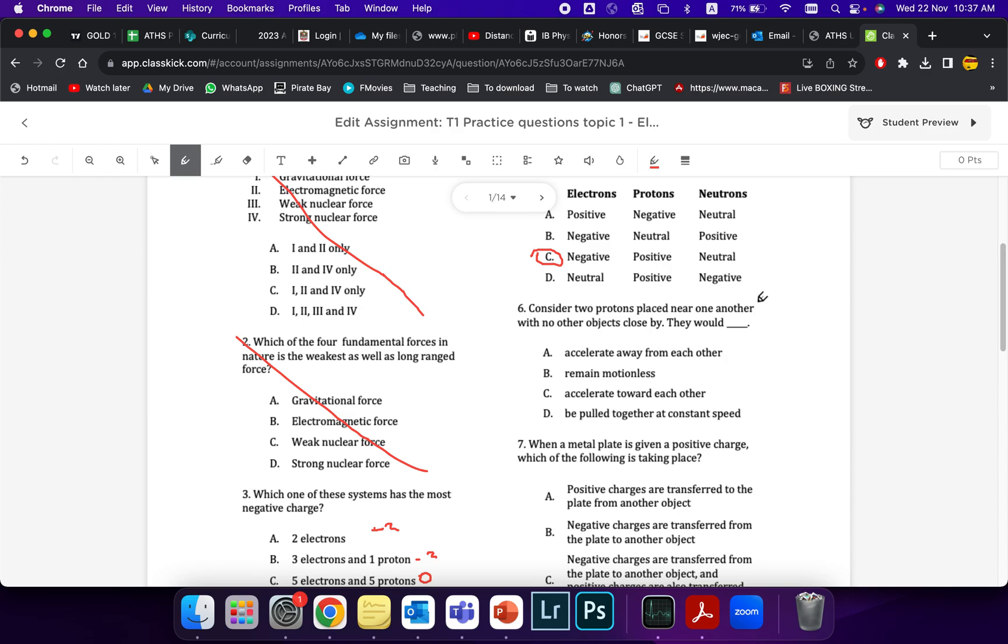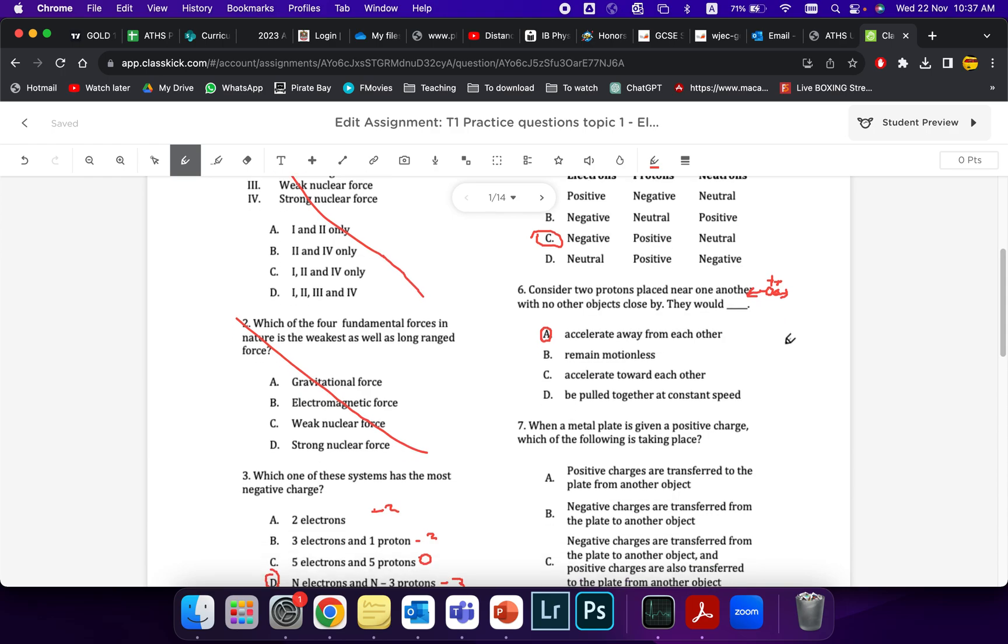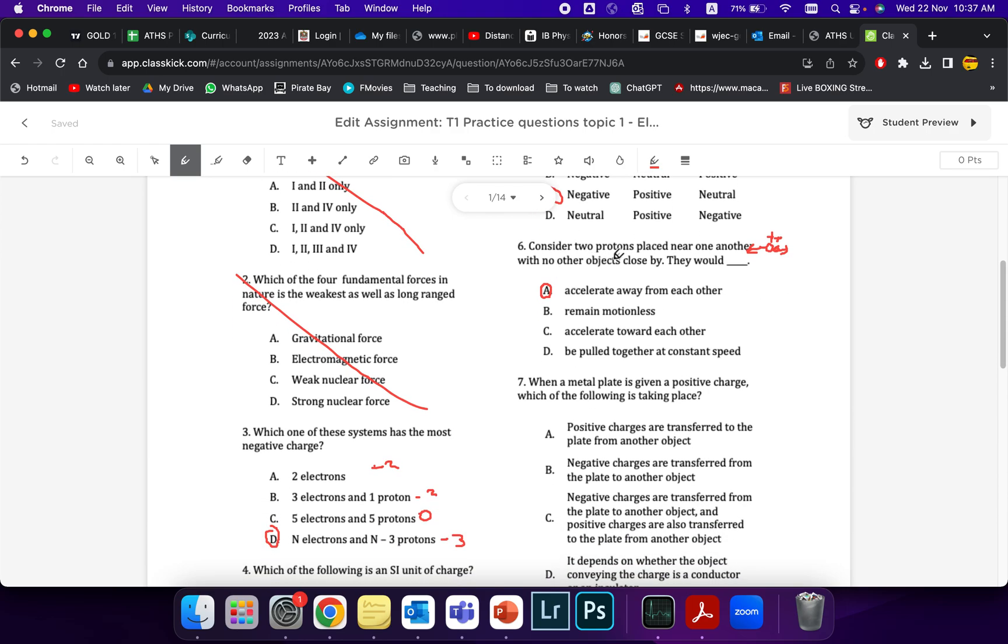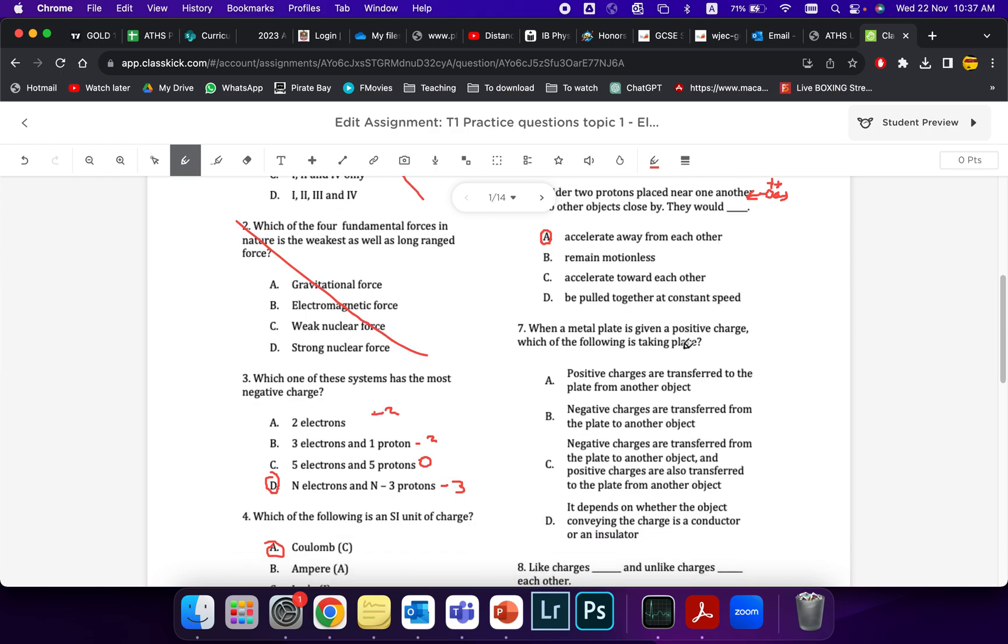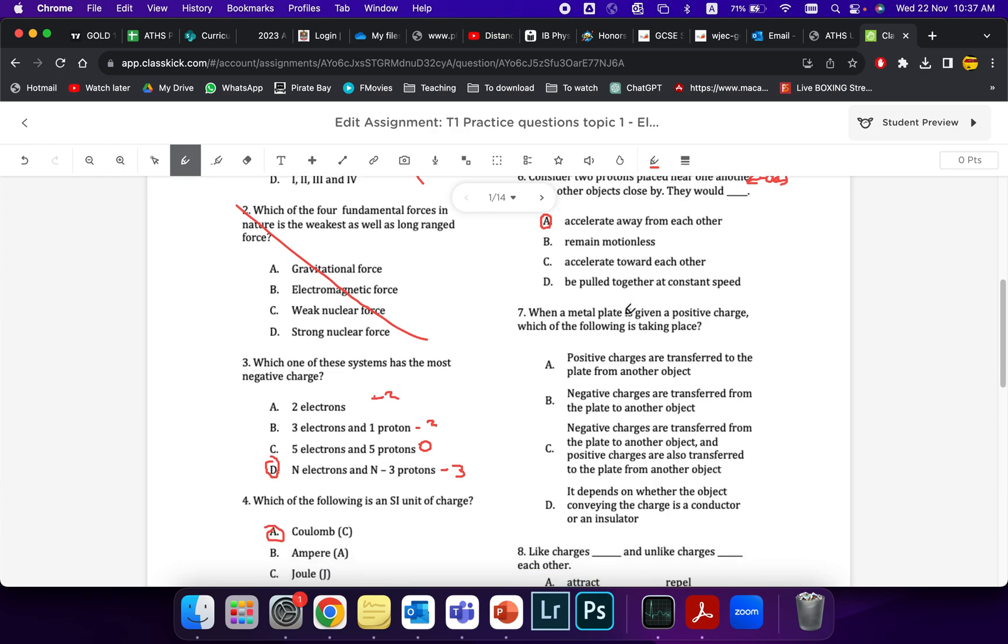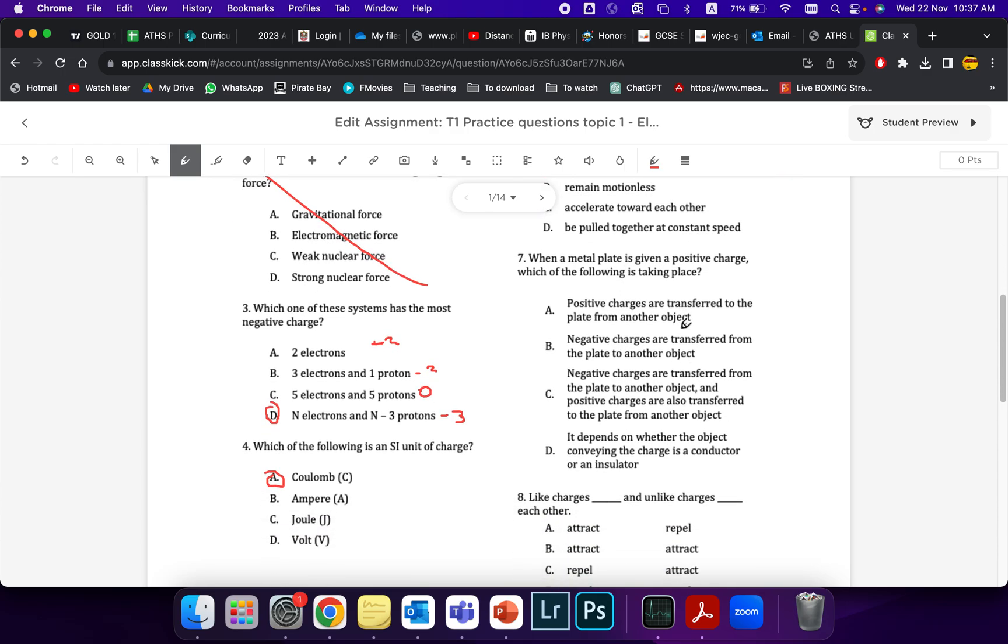When you do place two protons near each other, if you placed two protons, plus and a plus, they will, of course, repel. There will be a force. Coulomb's law, funnily enough, there will be a force, and they will accelerate, because a force makes a mass accelerate. So they will always accelerate, in this case, away from each other. If they were opposite charges, plus and a minus, they will accelerate towards each other. It will never be constant speed.